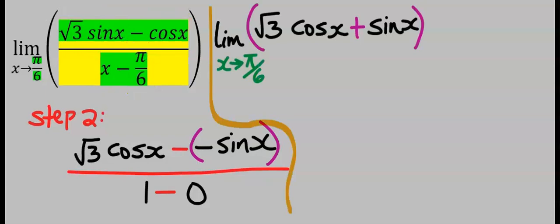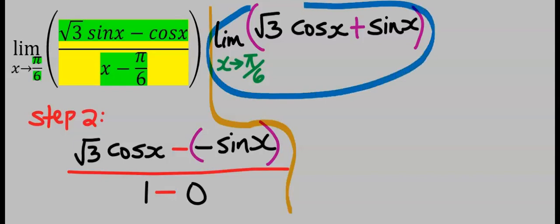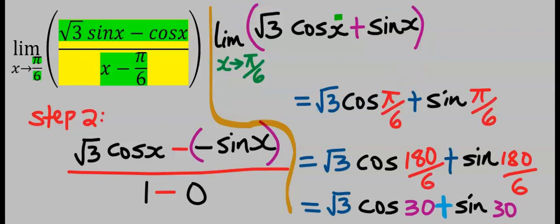Next, I will rearrange the function, then I will take the limit as x tends to pi over 6. Hence, whenever I see x, I will replace it with pi over 6.